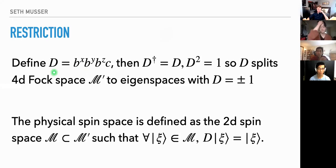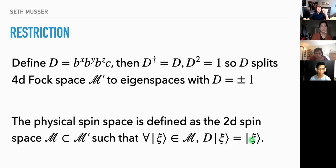We need a way to get rid of those extra degrees of freedom and return to physical degrees of freedom. That comes in the form of the D operator that Kitaev defines. On each site we take the product of the four Majoranas. This is Hermitian and squares to one, so it splits the 4D Fock space M' into eigenspaces with plus or minus one. To be physical, we restrict to the eigenspace where D equals one.